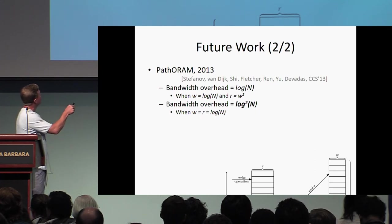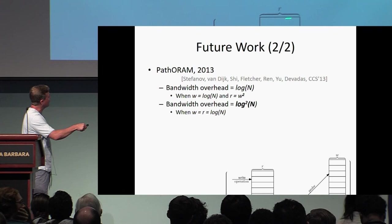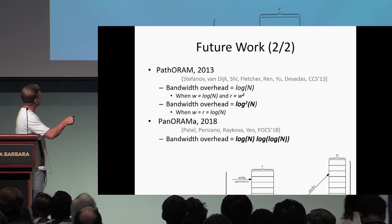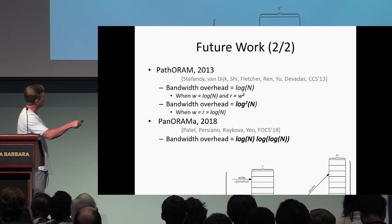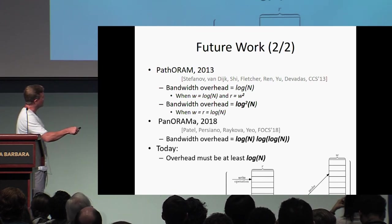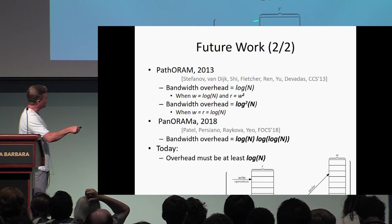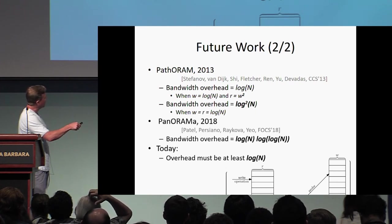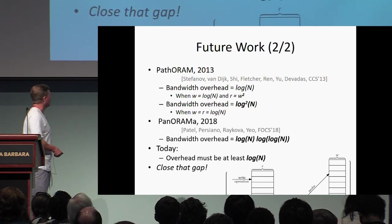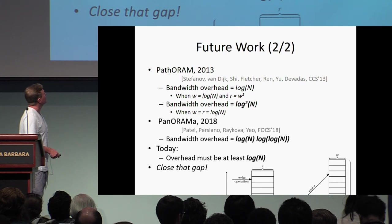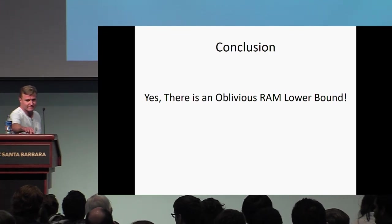To summarize: we have PathORAM from 2013, which is optimal but requires large word sizes in the simulated array, and the Panorama ORAM to be presented at FOCS, which achieves log n overhead without that restriction. The lower bound proved today says overhead must be at least log n. When array entries are of log n size, there's still a gap between upper and lower bounds that we don't yet understand — it would be nice if someone could close that. And the conclusion is: yes, there is an Oblivious RAM lower bound.